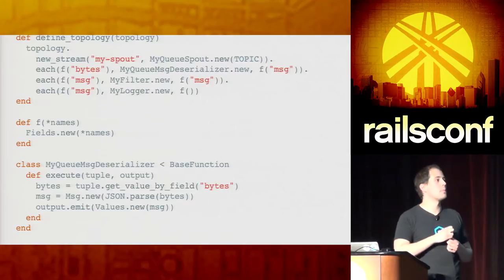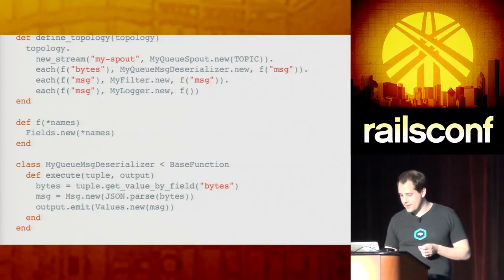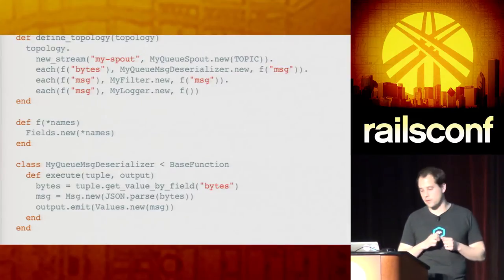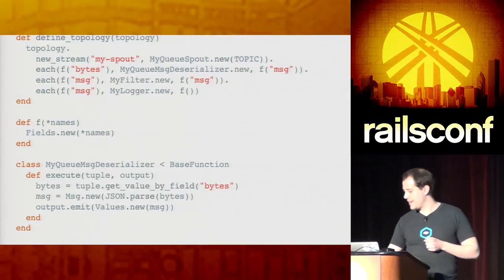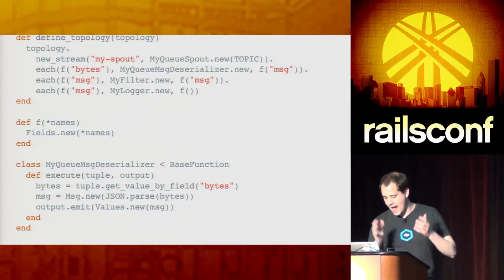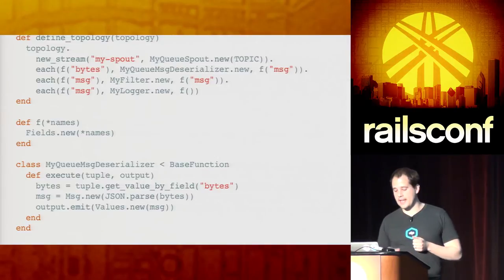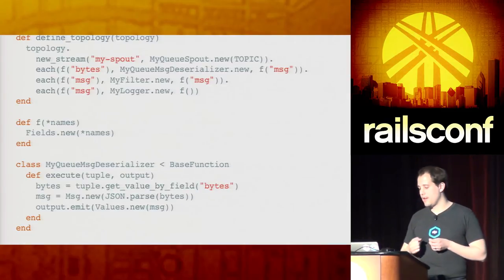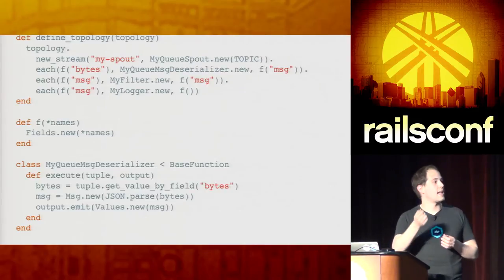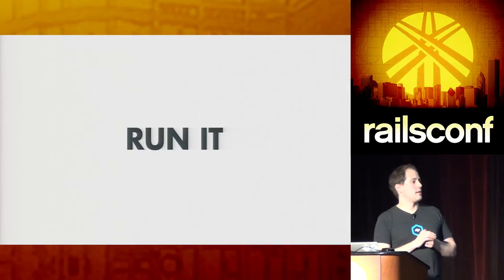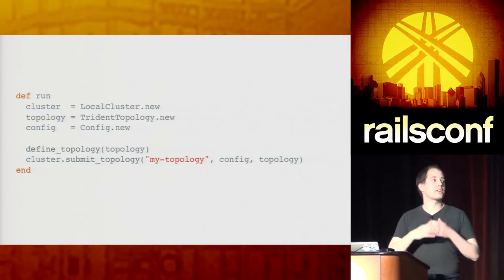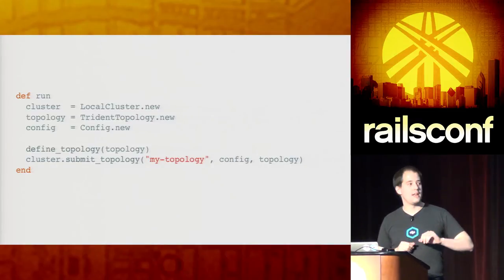Usually these spouts will just output tuples that are raw bytes, so the next step is to deserialize them. We're getting a message, expecting a tuple that contains the field 'bytes', passing it to the queue message deserializer, and the output is a tuple that contains 'message'. Then we chain that — for each tuple we get, we pass it to MyFilter, which filters it based on our predicates, and output another tuple containing 'message'. Finally we pass it to the logger. The easiest way to get this running for playing around is running it locally, and RedStorm does this.